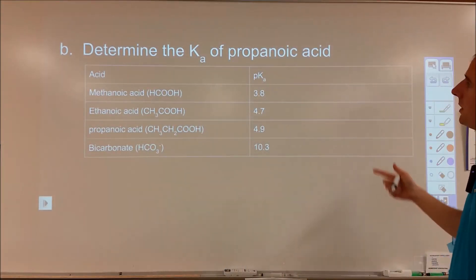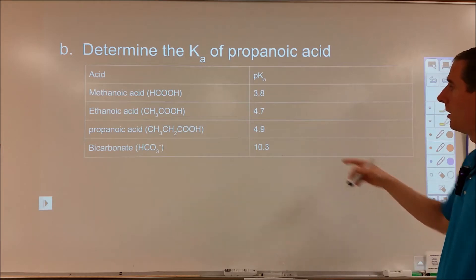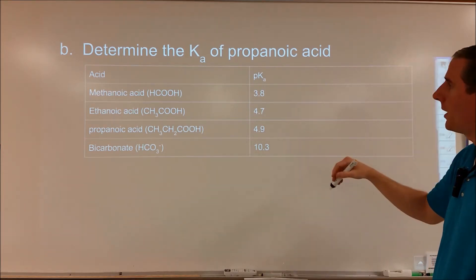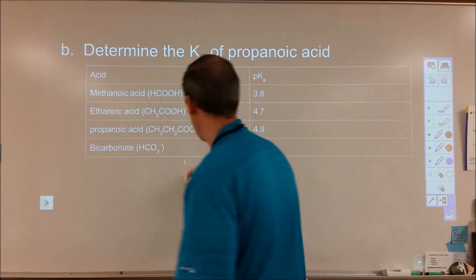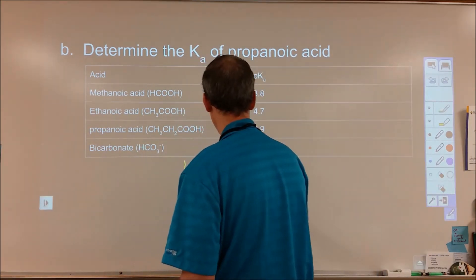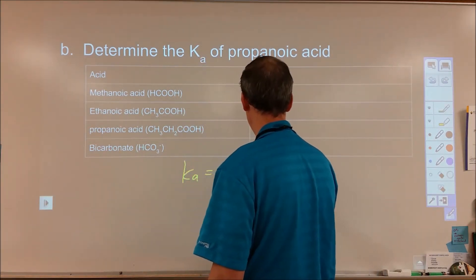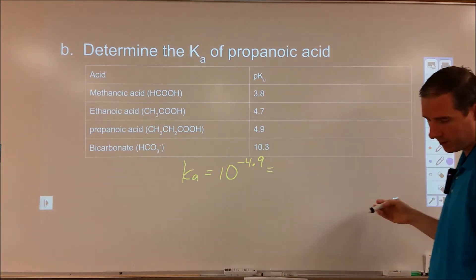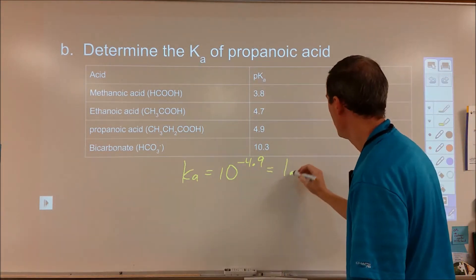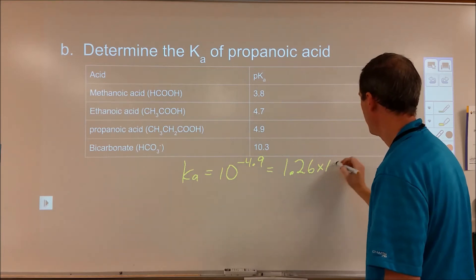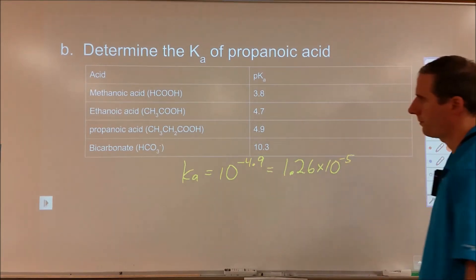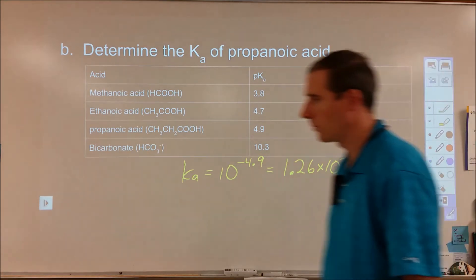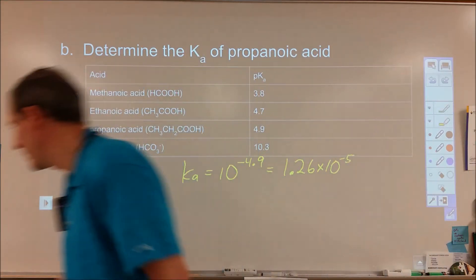We need to find the Ka of propanoic acid, which has a pKa of 4.9. So our Ka is just going to be 10 to the negative 4.9. Plugging that into the calculator, that comes out to be 1.26 times 10 to the negative 5. So there's our Ka.